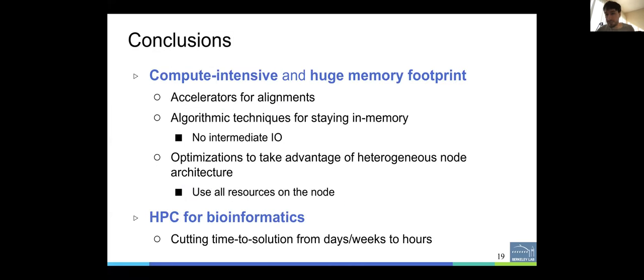Biological workflows can be both compute intensive and they usually have huge memory footprints. I think that is what makes this problem more challenging compared to physics simulations or chemistry simulations. In our approach, we use accelerators for the alignments and we relied on algorithmic techniques for staying in memory and we use no intermediate I/O. We only utilize I/O at the beginning and at the end. So this makes our approach faster. And then we also propose a lot of optimizations to take advantage of the heterogeneous node architectures to be able to use all resources on the node.